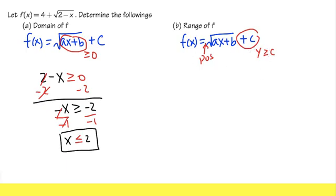Anyway, this is what we have, and you can just tell c in this case—the number outside of the square root is 4, so we just get y greater than or equal to 4, and yes, this is it.